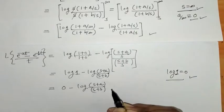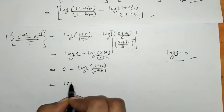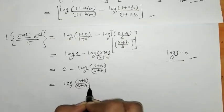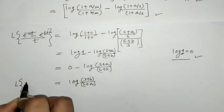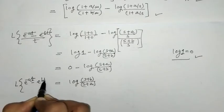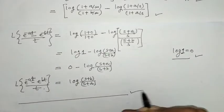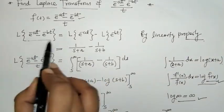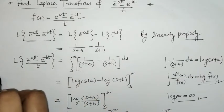By the log rule, the final result is log((s+b)/(s+a)). This is the required Laplace transform. So what we did here: first we found the Laplace of the numerator, then applied the effect of division by t by taking the integral of that Laplace from s to infinity.